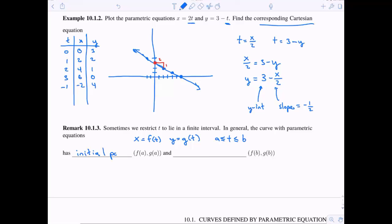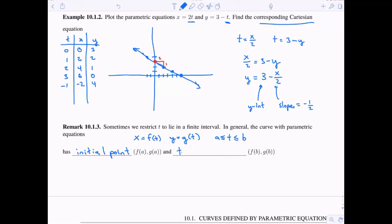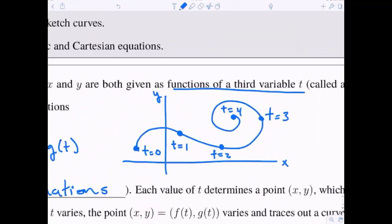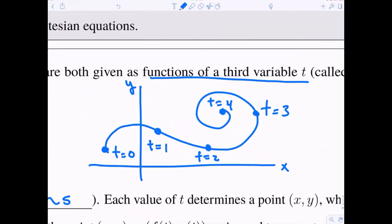In this case, we can talk about an initial point and a terminal point. So our initial point is when t is equal to a, and our terminal point is when t is equal to b. Now, actually, if we go back up to my first example here, my little sketch, we can see at t equals 0, that was our initial point.